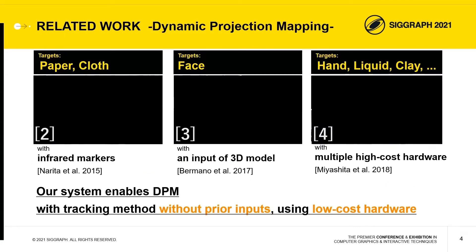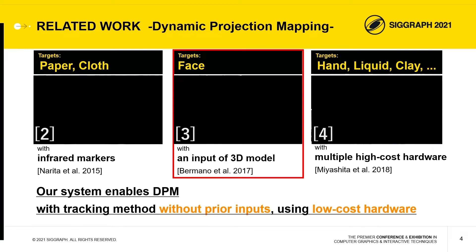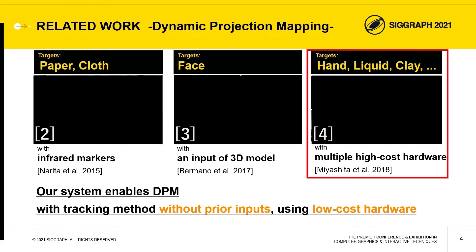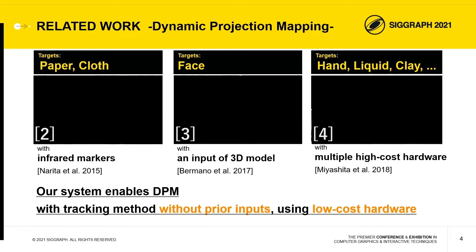Next, we'd like to talk about related works. In the left figure, targets are paper and cloth, and this system tracks targets with infrared markers. In the middle figure, a target face is tracked using a pre-input 3D model. In the right figure, this system can project onto various objects — hands, liquid, and clay — but requires multiple high-cost hardware. Our system enables dynamic projection mapping without prior inputs, using low-cost hardware.